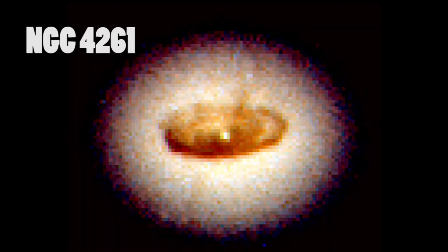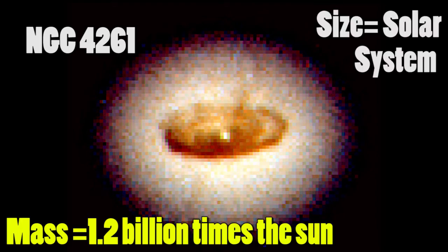For example, in the core of the galaxy NGC 4261, there is a brown spiral-shaped disc that is rotating. The disc is about the size of our solar system but weighs 1.2 billion times as much as our sun. Such a huge mass for a disc might indicate that there is a black hole present within the disc.